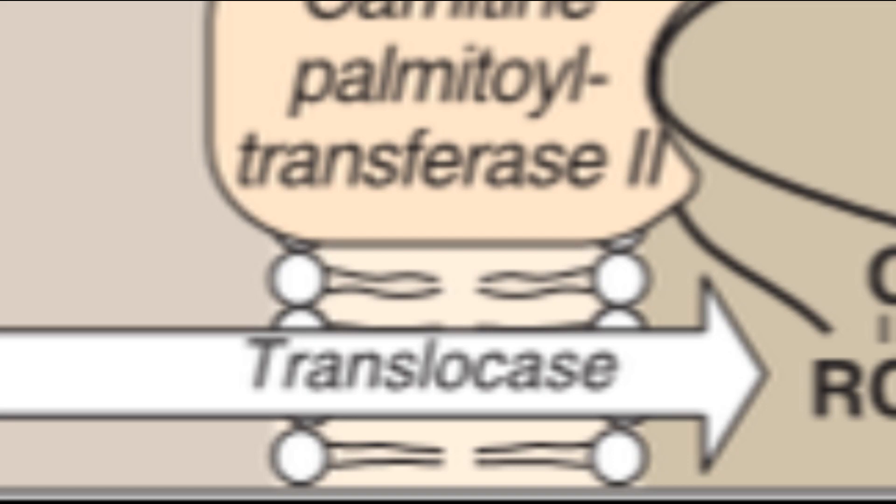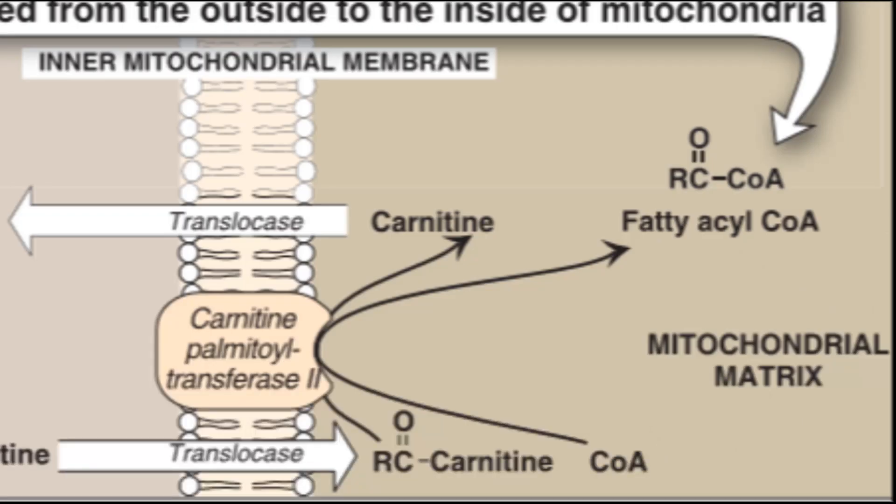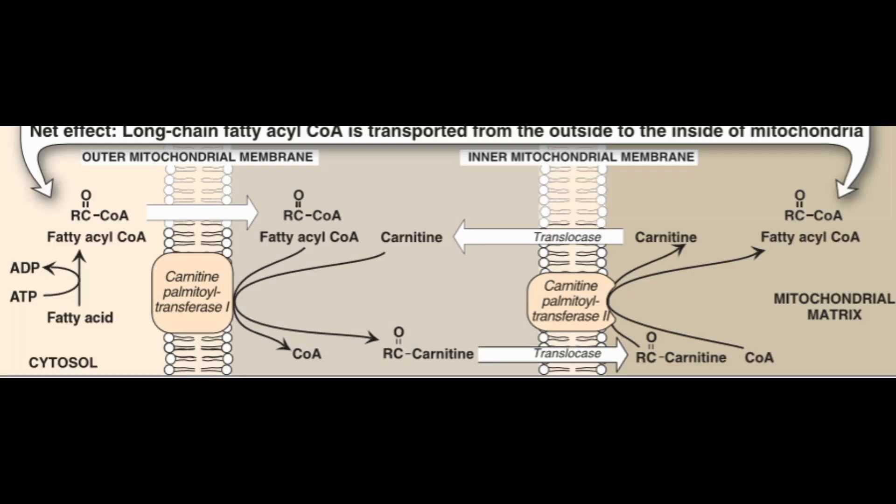Now CAT1 once again transfers the acyl group from carnitine to the coenzyme A in the matrix, thus regenerating the free carnitine.